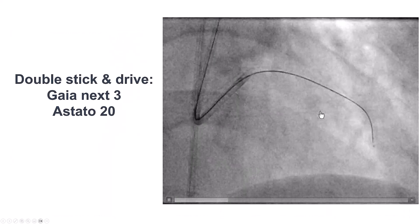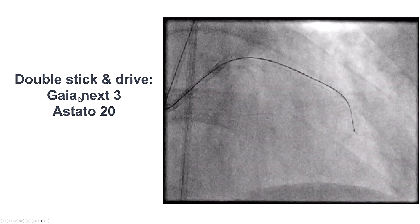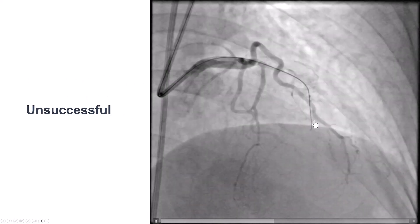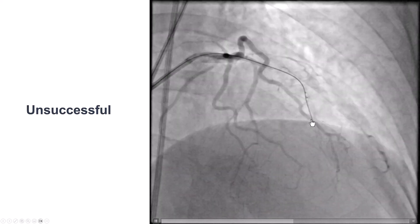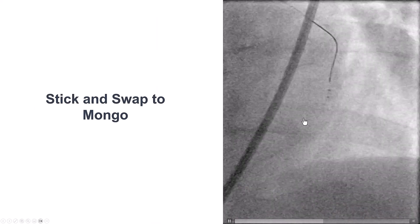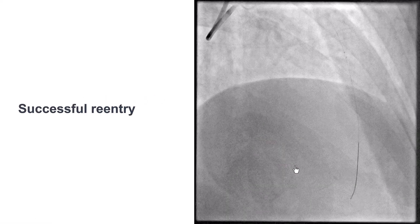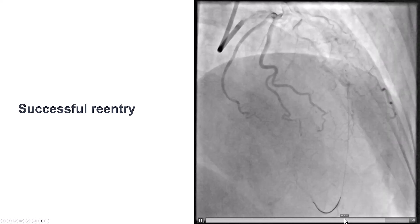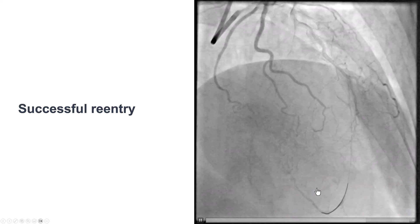As a result, we decided to switch to ADR with the Stingray device. We delivered the Stingray and tried to puncture with a Gaia X3 and then a Steto 20, but we were unable to re-enter. We then used the stick-and-swap technique for a Gladius Mongo guidewire, and this time we did successfully re-enter into the distal true lumen. We confirmed the re-entry as the vessel opacified with contrast injection, confirming we were in the true lumen.